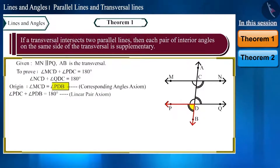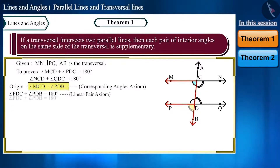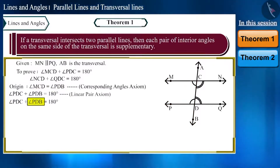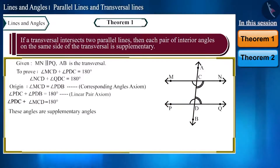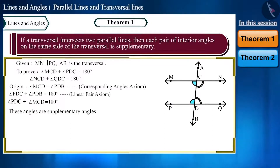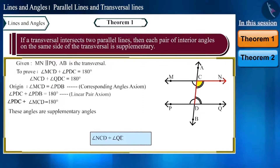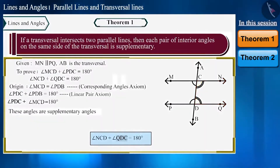Angle MCD and angle PDB are corresponding angles, so they are equal. Angle PDC and angle PDB form a linear pair, so their sum is 180 degrees. Since angle PDB equals angle MCD, we can substitute to get angle MCD plus angle PDC equals 180 degrees — they are supplementary. Similarly, we can prove angle MCD and angle QDC are supplementary.